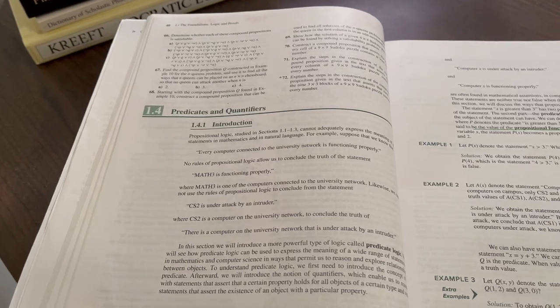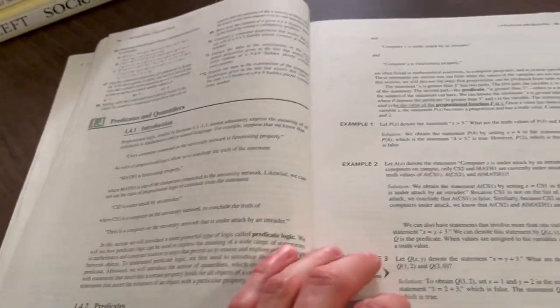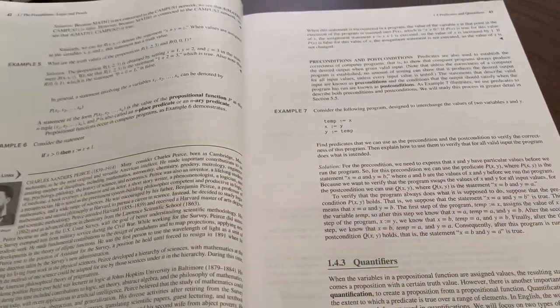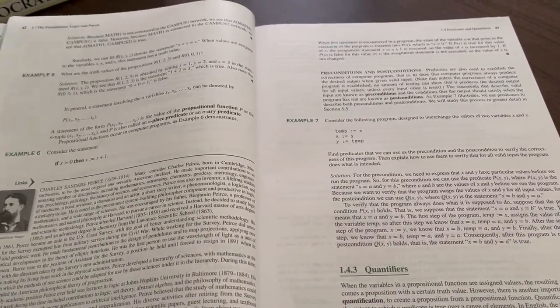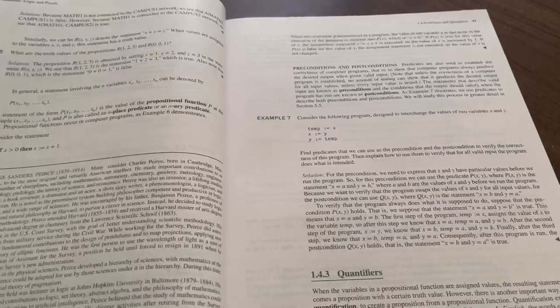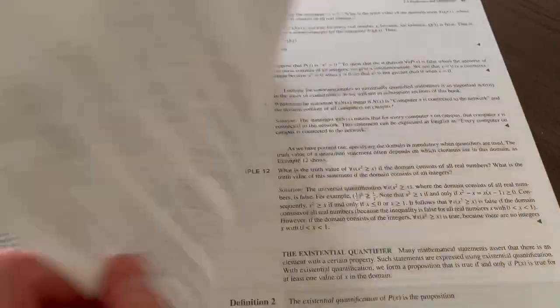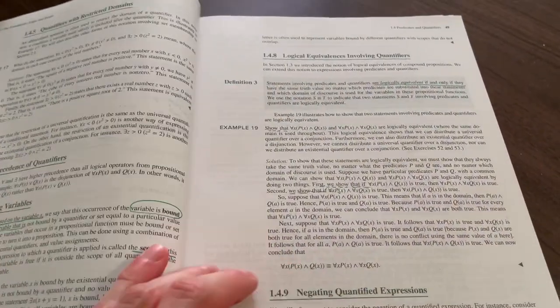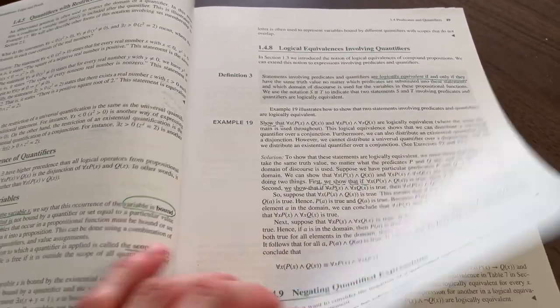Then section 1.4 is on predicates and quantifiers. So here we're moving into predicate logic, where we can say for all, we can say there exists a quantifiers over finite domains, logical equivalencies, logical equivalencies involving quantifiers.